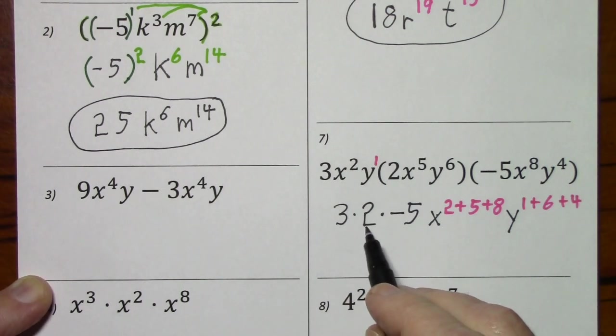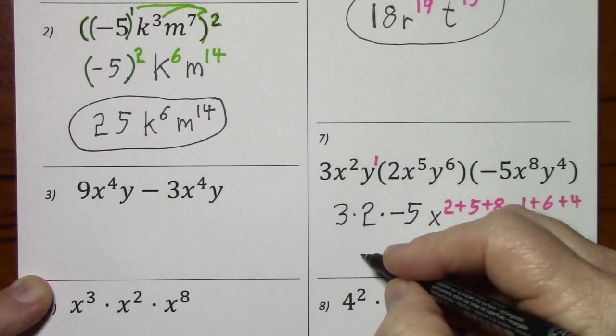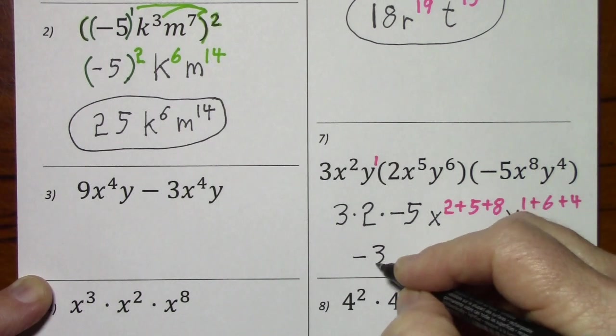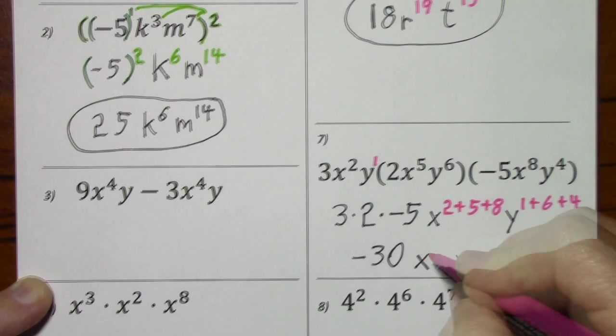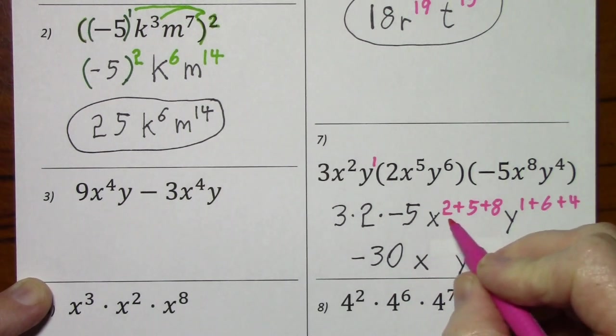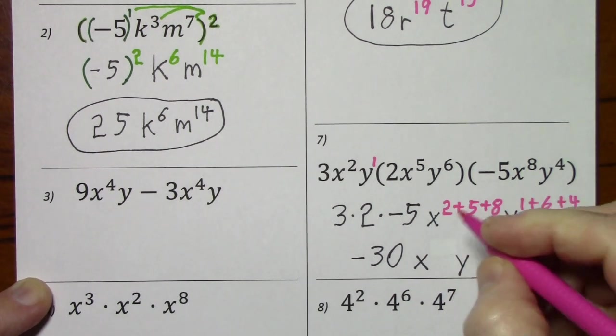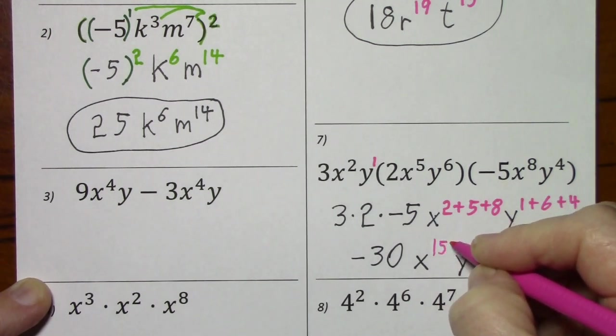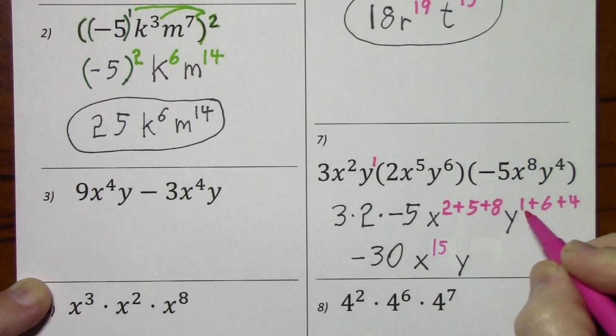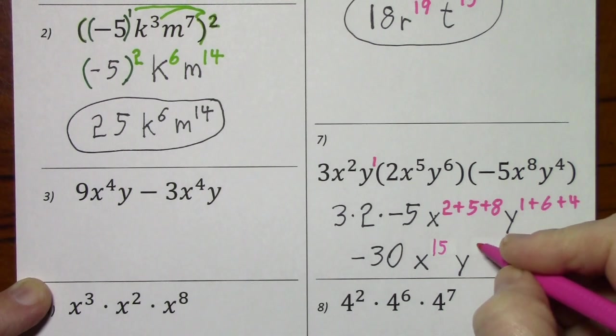So 3 times 2 is 6 times negative 5. X to the 15, y 7 and 4 is 11.